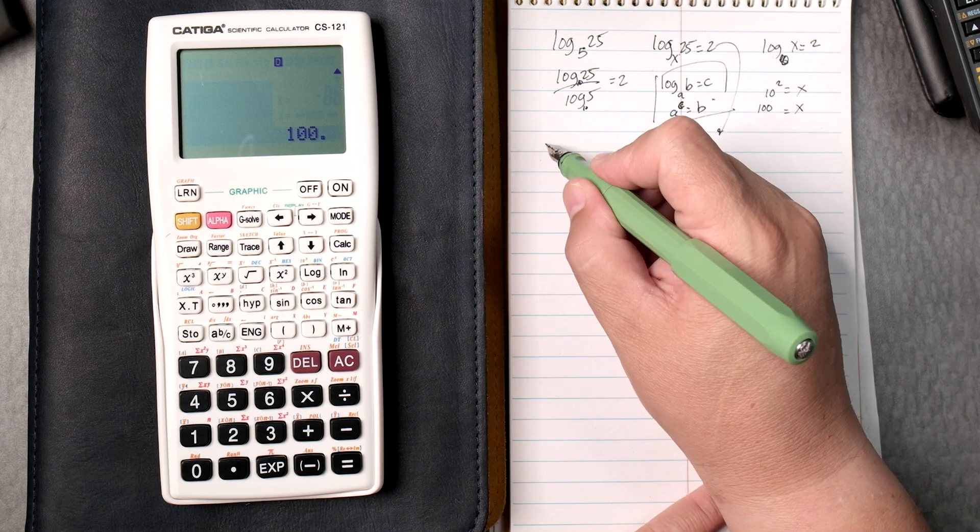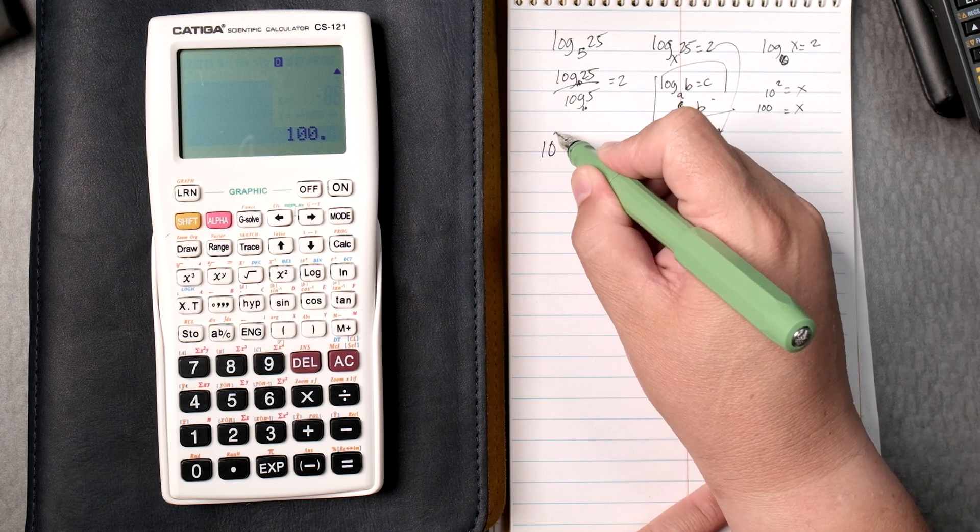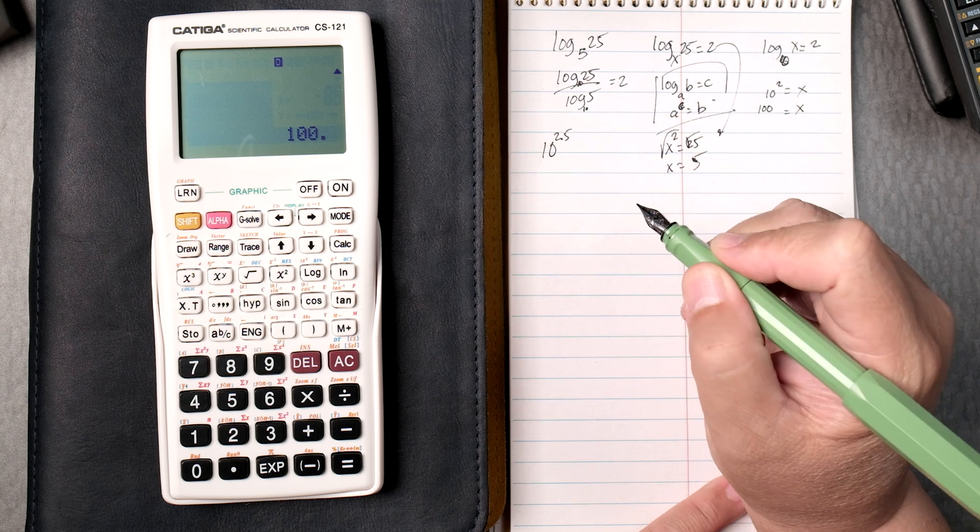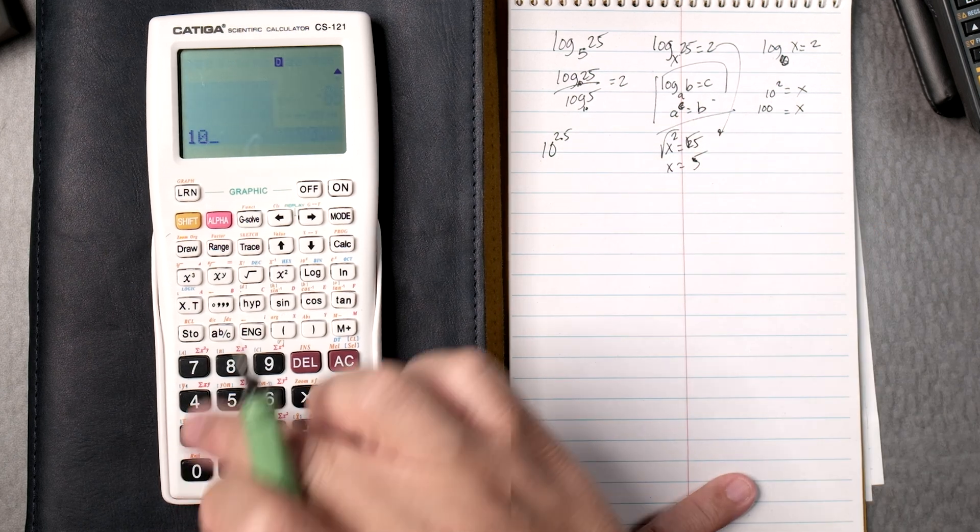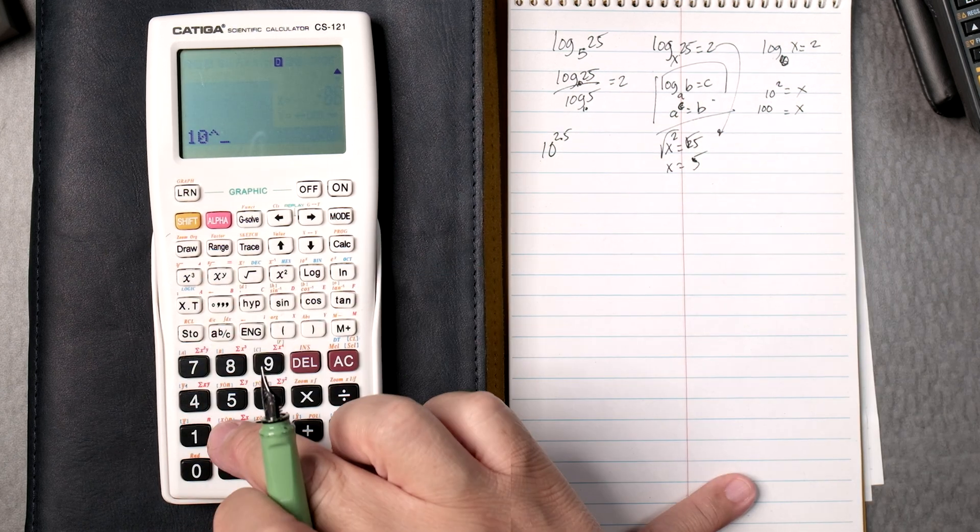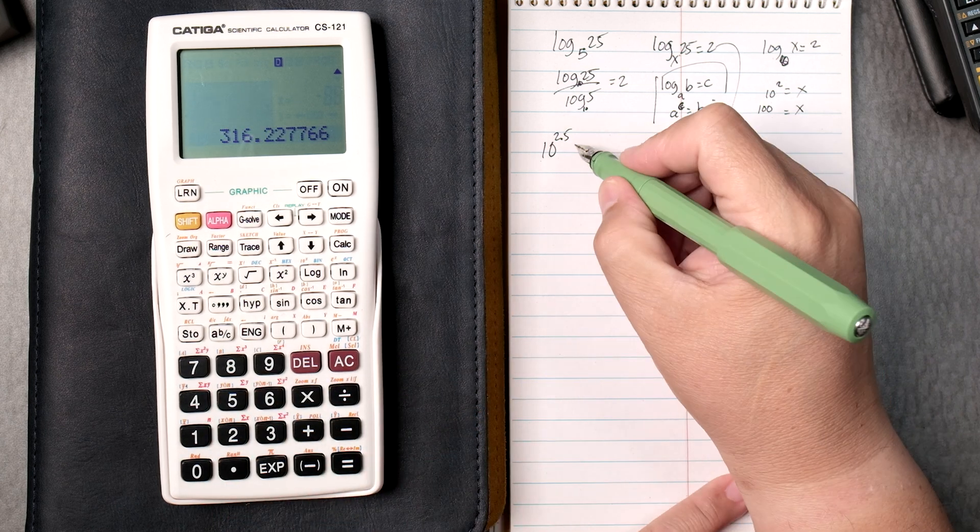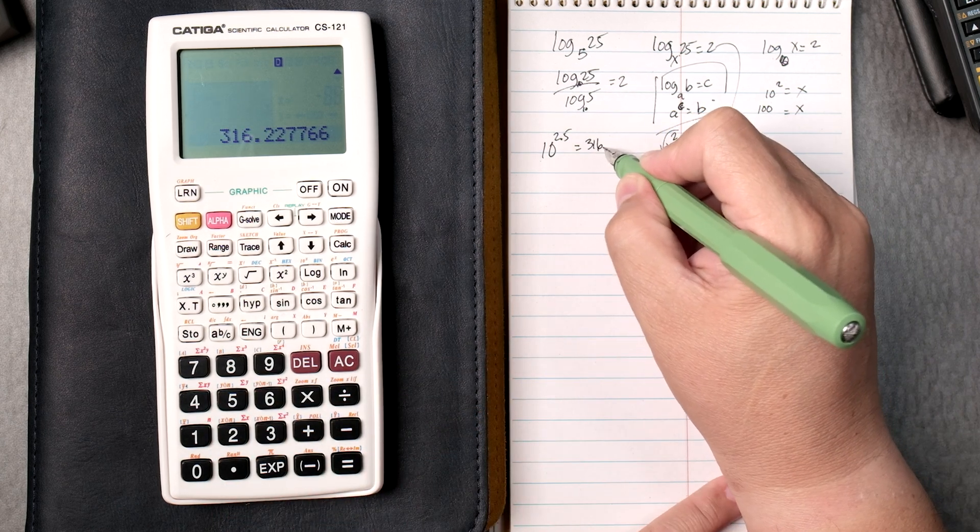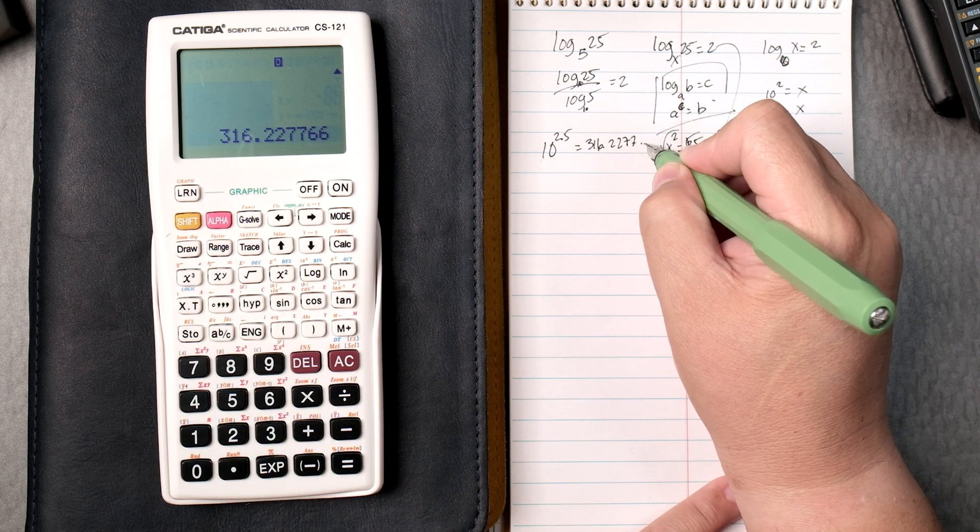Okay, so let's do some antilogs. 10 to the 2.5. We can say 10 y to the x, 2.5 equals, and that gives you 3.16227766 and so forth.